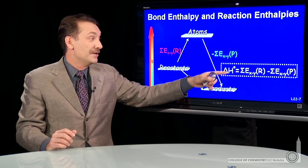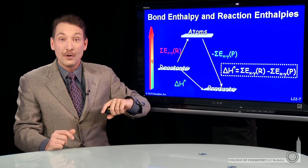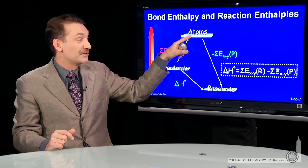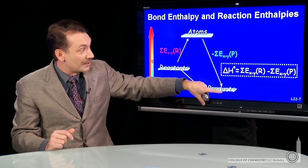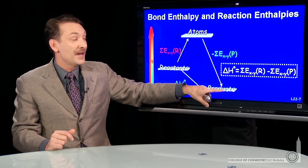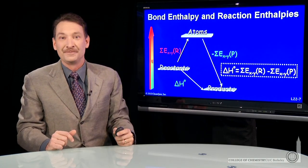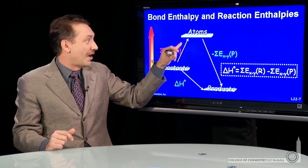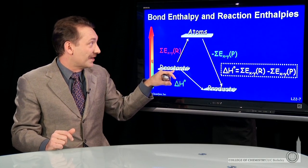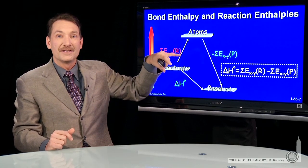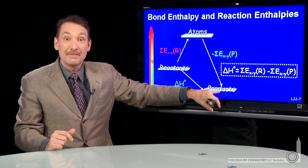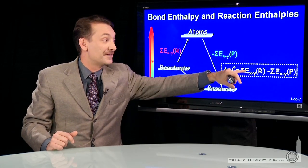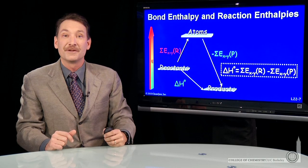In either case, you could find the enthalpy of the whole chemical reaction by taking the sums of all the bonds that you broke and the sums of all the bonds that you formed and subtracting the two. So take all the enthalpies of breaking bonds as positive numbers, all the enthalpies of making bonds as positive numbers, and subtract the two, you'll get the enthalpy for the chemical reaction.